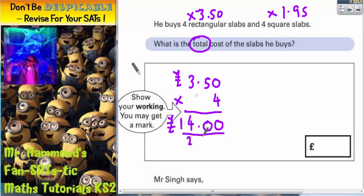So the rectangular slabs cost £14. They are the rectangular ones.